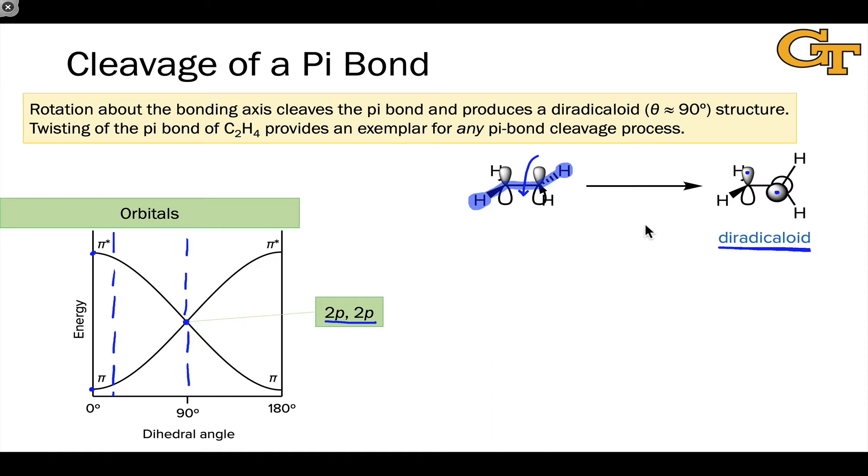As we continue the rotation, we get the bonding interaction back and the energies start splitting again with the pi orbital lower in energy and pi star orbital higher. It's not surprising that this graph is symmetric because that rotation creates a structure that is either identical to or enantiomeric with the corresponding structure on the other side. For example, the 120 degree structure is identical to the 60 degree structure in the case of ethylene.